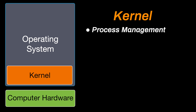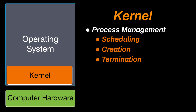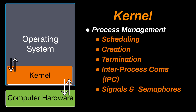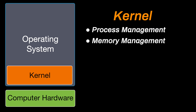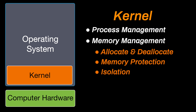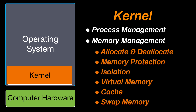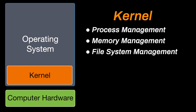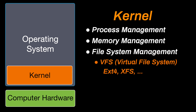Process management in the kernel oversees the execution of processes by managing scheduling, creation, and termination. You can think of a process as a running program. It also facilitates communication and synchronization between processes through inter-process communication and signals. Memory management directly manages memory allocation and deallocation, playing a crucial role in providing memory protection and isolation, which safeguards processes from interfering with each other's memory spaces. The file management system handles data storage, access, and organization on disk. The virtual file system allows seamless support for multiple file systems like ext4 and xfs.